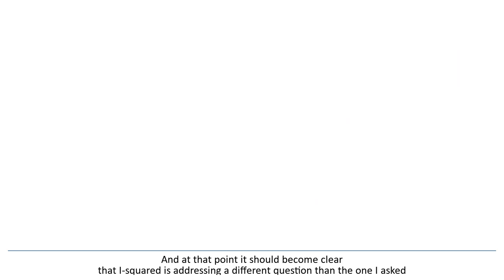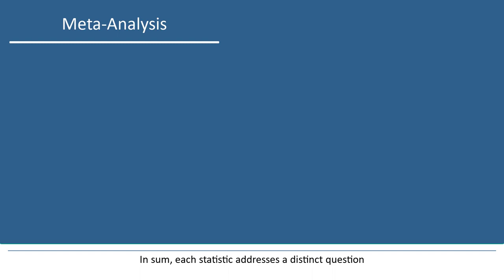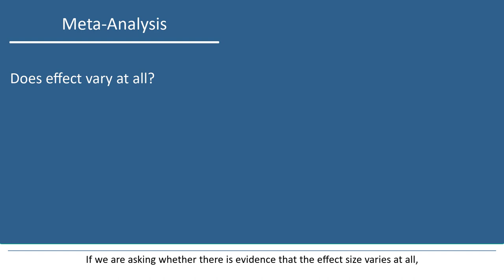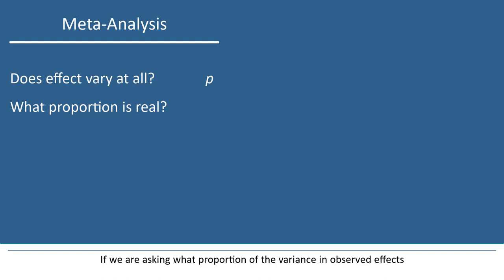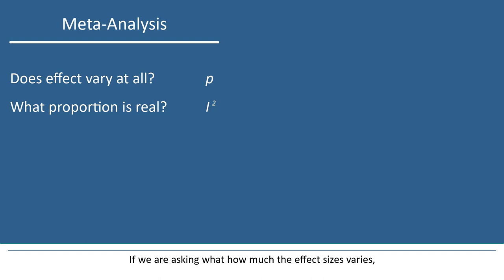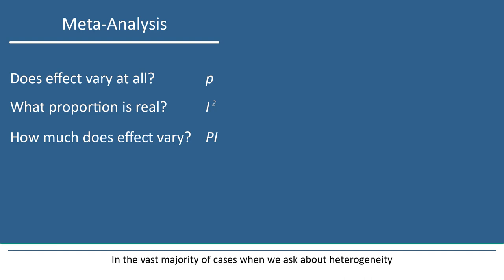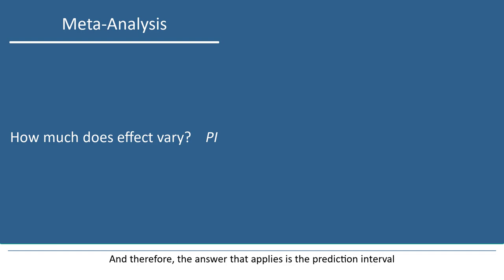In sum, each statistic addresses a distinct question. If we're asking whether there's evidence that the effect size varies at all, that is addressed by a test of the null hypothesis that there is zero variation in effects. If we're asking what proportion of the variance in observed effects is attributed to variance in true effects rather than sampling error, that is addressed by I-squared. If we're asking how much the effect size varies, that question is addressed by the prediction interval. In the vast majority of cases, when we ask about heterogeneity, we are asking how much the effect size varies, and therefore the answer that applies is the prediction interval. Next, I'll show how I would report the results of the analysis.